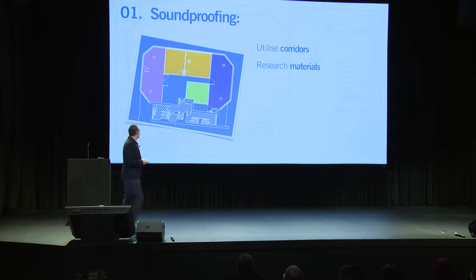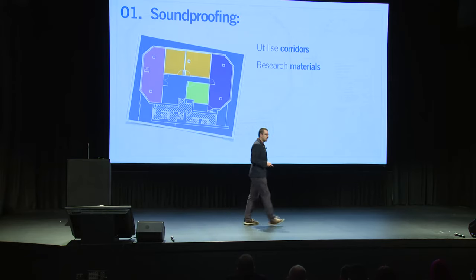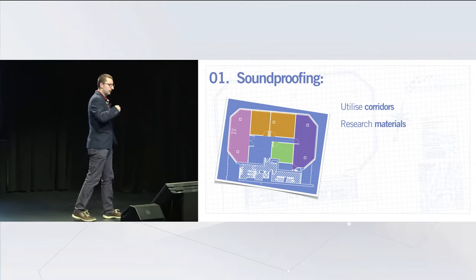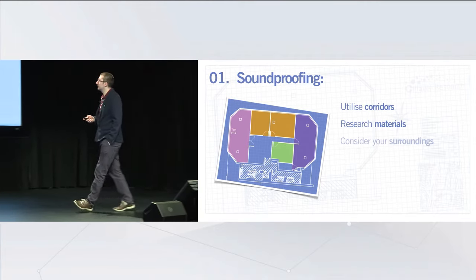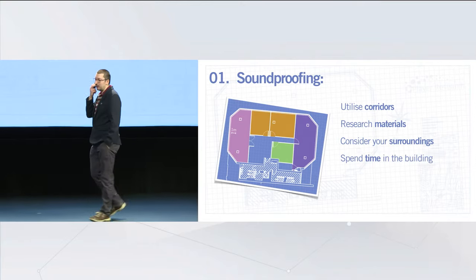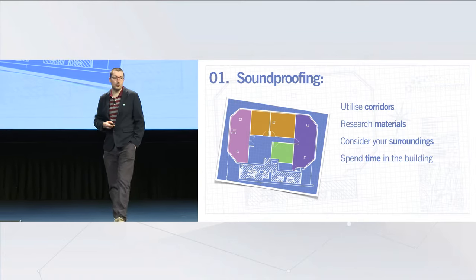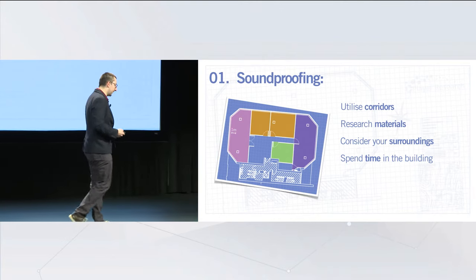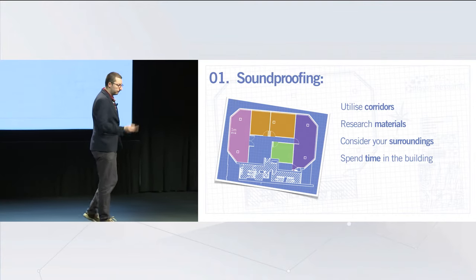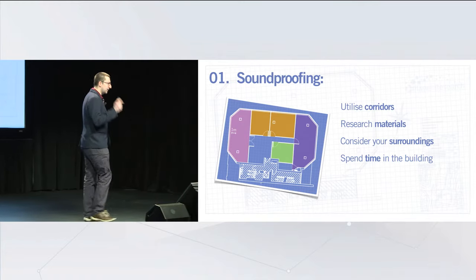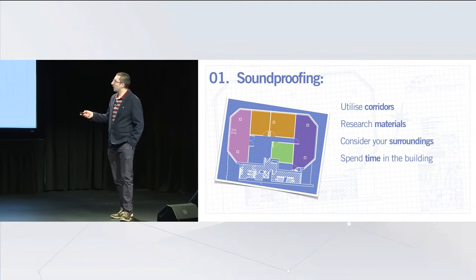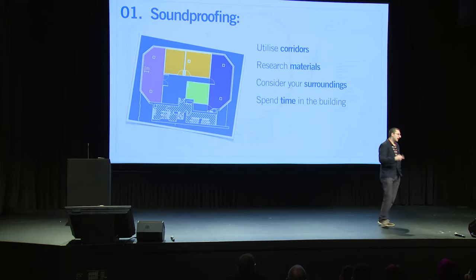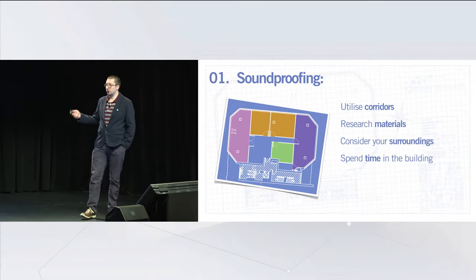Definitely research your materials. We found interesting solutions like fireproof foam that can go into the suspended ceiling to help stop transmission, and special types of plasterboard that can help stop sound transmission. Consider your surroundings too — if you can, spend some time in the building before you fit it out. When this building was empty, I spent an afternoon there alone and learned a lot about where sound was coming from. The right-hand side is the main road with police sirens, buses — very noisy. We changed that to be the multiplayer room, where everyone plays with headphones on. Be clever about how you use the surrounding area and design your rooms accordingly.